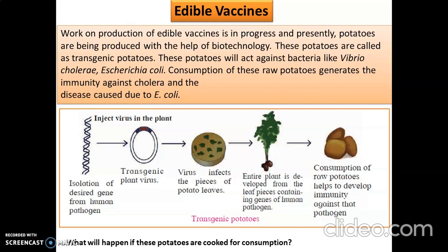The disadvantage is that we cannot eat raw potato — potato is not a vegetable to be eaten raw. If we cook the potatoes, due to high temperature the microorganisms or pathogens in them are killed, so the vaccine becomes of no use. Scientists are now trying to put the vaccine into vegetables that we can eat raw, like cucumber or tomato. In that case it would be better — we might eventually get a vaccine in the form of our favorite food, maybe chocolate.